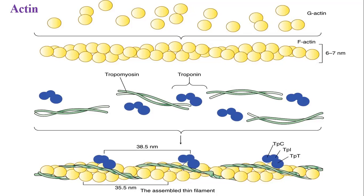Under the electron microscope, F-actin looks like two strings of beads wound helically around each other — like a rope. F-actin is thus a double-stranded helix of actin monomers, and this actin filament is found associated with tropomyosin and troponin units.